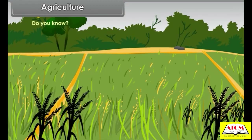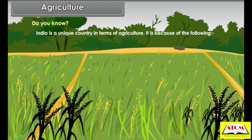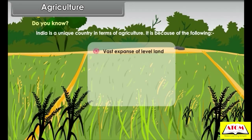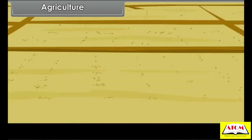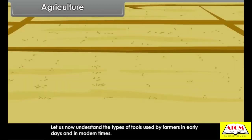India is a unique country in terms of agriculture because of the following: vast expanse of level land, rich soils, wide climatic variations, ample sunshine, and long growing season. Let us now understand the types of tools used by farmers in early days and in modern times.